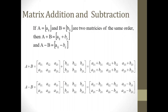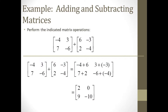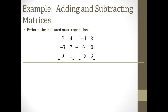Let's consider a specific example. Here we want to add a pair of 2 by 2 matrices. The result will be a new 2 by 2 matrix. The element in row 1, column 1 will be negative 4 plus 6, which yields 2. For row 1, column 2, we get 3 plus negative 3, which equals 0. Continuing, we get 7 plus 2 equals 9 for row 2, column 1, and negative 6 plus 4 equals negative 2 for row 2, column 2.